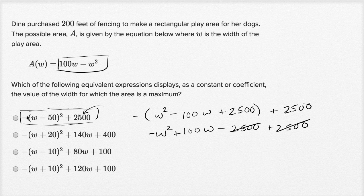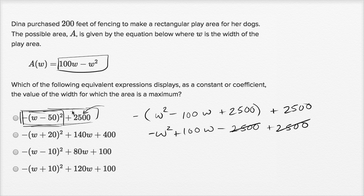This part right over here — W minus 50 squared — is always going to be non-negative, because if you take the square of something it's going to be non-negative. But then if you take the negative of it, it's going to be non-positive — less than or equal to zero. And then you have plus 2,500. So if you want to maximize this expression, you want this negative squared part to not subtract anything, meaning you want it to be equal to zero.